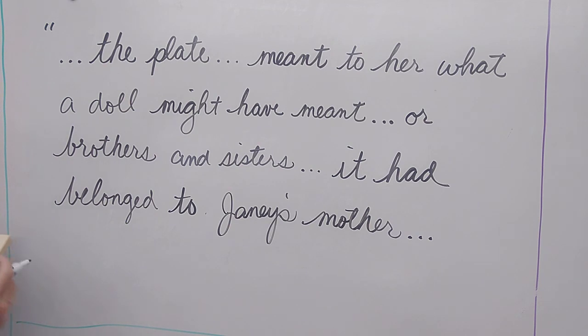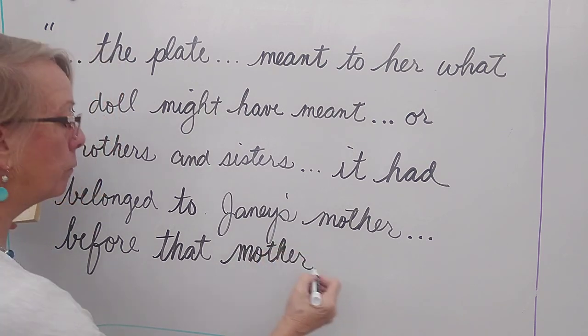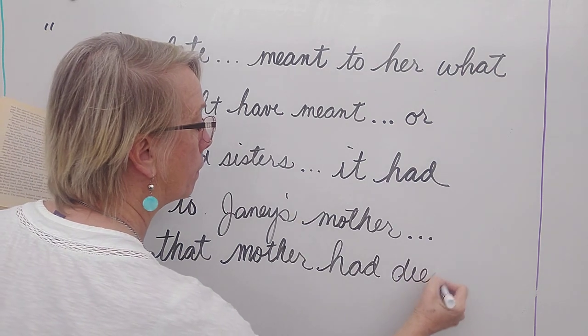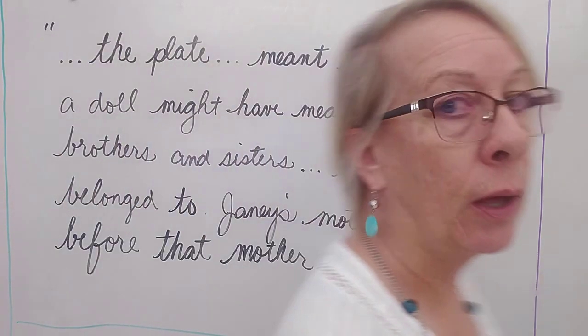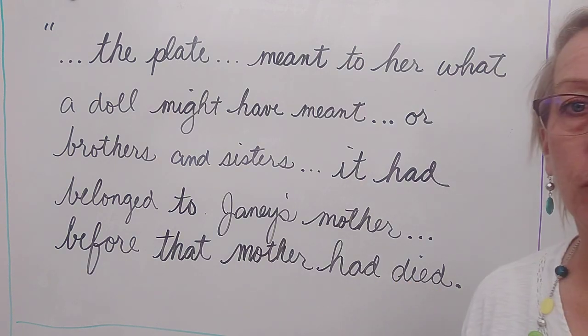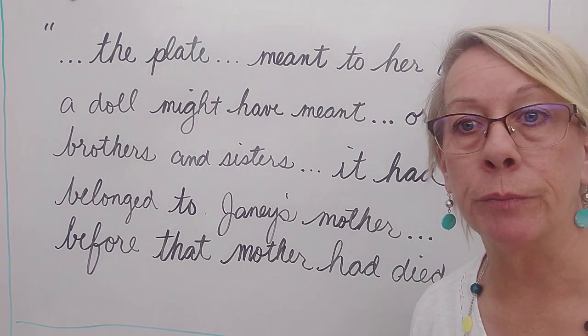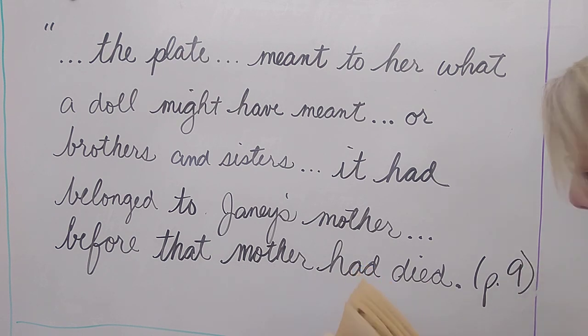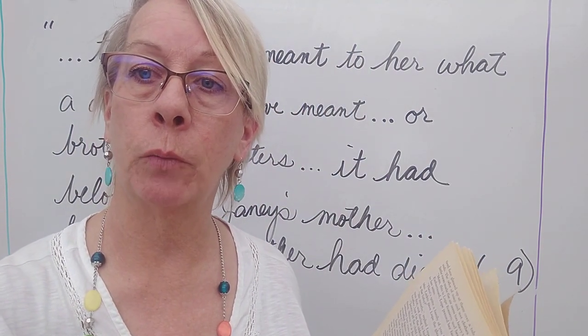So it meant more to her than brothers and sisters even. Continue in. We're going to skip a little bit. We're going to put our ellipses again. We could say the part about her great-grandmother, but the most important part is that it had belonged to her mother. It had belonged to Janie's mother. And then we want to put, let's bring it together again, Janie's mother, before she had died. Before that mother had died. So you could be riding along with me if you'd like.